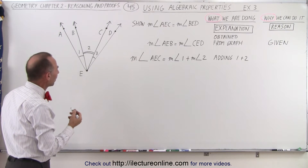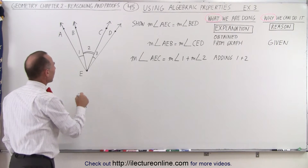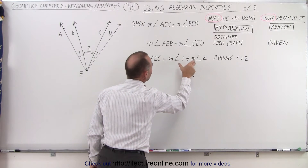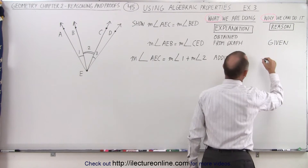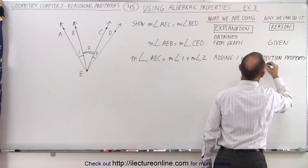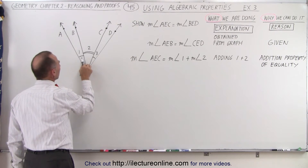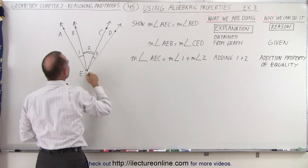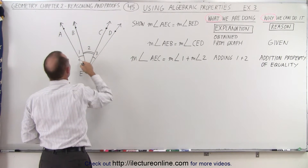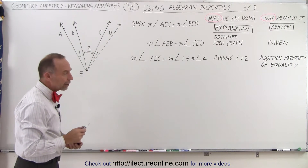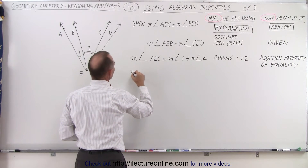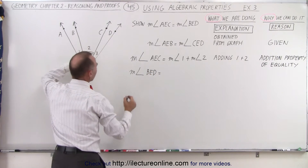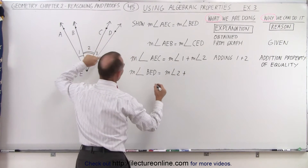Why can I do that? I have an equation where the left side equals the right side because when I add these two angles together, they equate to angle AEC. So I'm using the addition property of equality. Similarly, the measure of angle BED must equal the measure of angle 2 plus the measure of angle 3, again using the addition property of equality.